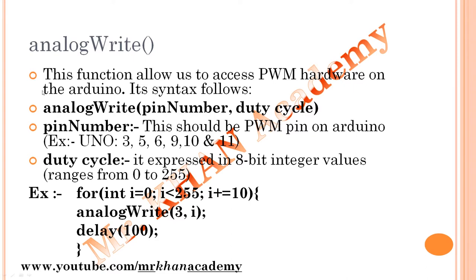Next, analogWrite: this function allows us to access the PWM hardware on the Arduino. For example, a DC motor uses PWM hardware. If we require analog output from the Arduino, we use this PWM function. The syntax is `analogWrite(pin, dutyCycle)`. The pin number must be a PWM pin. For Arduino Uno, use pins 3, 5, 6, 9, 10, or 11. If using another board, check the specification to identify which pins are PWM pins, then do the circuit diagram and coding accordingly.